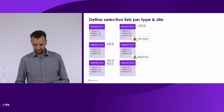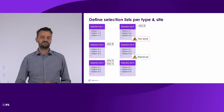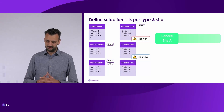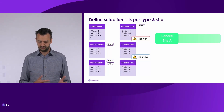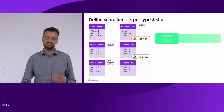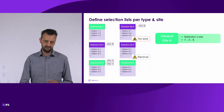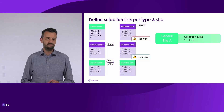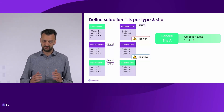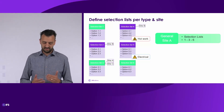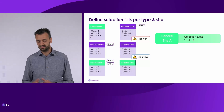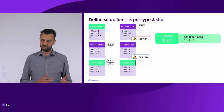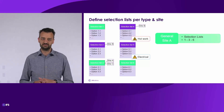Let's take a look at some examples. The first example is a general permit — no specific type applied and it's for site A. Which selection lists will be applied? Selection list one, because it's not linked to a site or a type, so it's always applied. Then selection list three, because it's linked to site A. And selection list six, because it's not linked to a specific type or specific site, so it's always applied.